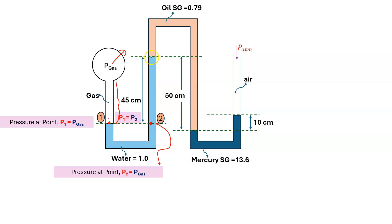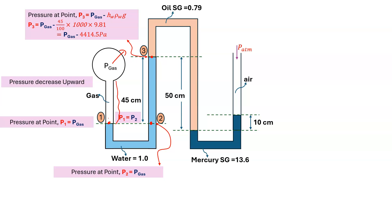Going upward, pressure decreases. So pressure at point 3 is P_gas minus h_w × rho_w × g. The height is 45 centimeters, so: P3 = P_gas minus (0.45 × 1000 × 9.8) = P_gas minus 4414.5 Pa.